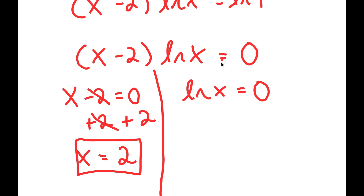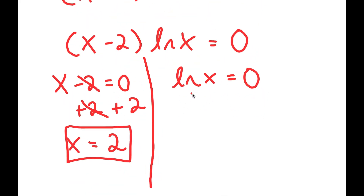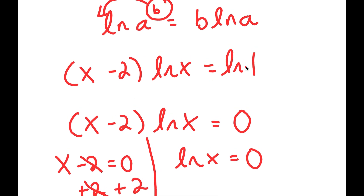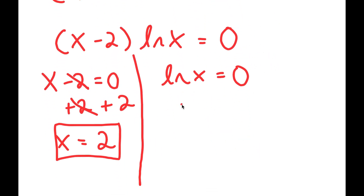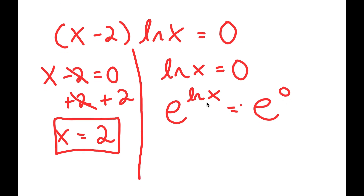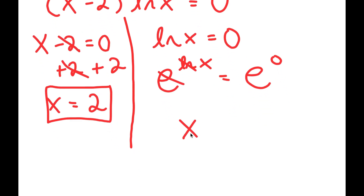For my second equation, I have ln of x equals 0. This is basically asking: ln of what is equal to 0? We already know ln of 1 is equal to 0, but what if we didn't know this? Well, what we can do is take e to the power of both sides. So I have e to the power of ln x is equal to e to the power of 0. And e and ln cancel out, so I get x is equal to e to the power of 0, which is 1.